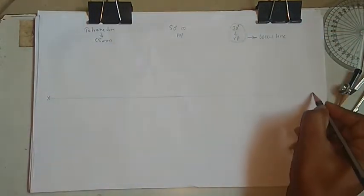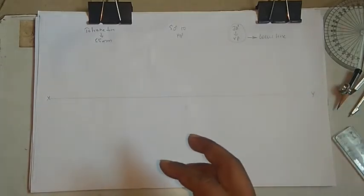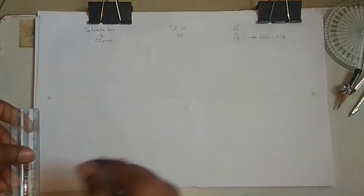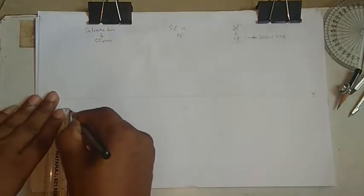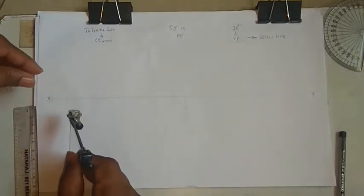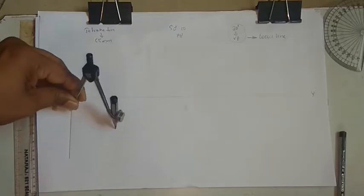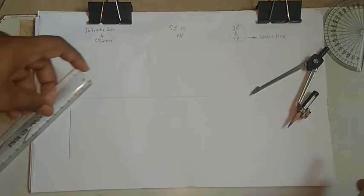The tetrahedron consists of four equilateral triangular faces. Here it is resting on a corner, so the corner should lie on the right side. The edge line given is 55mm. Take 55mm and cut from both ends, then connect the points.